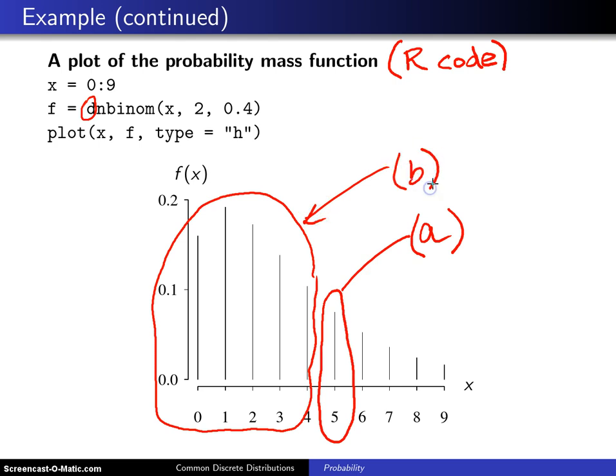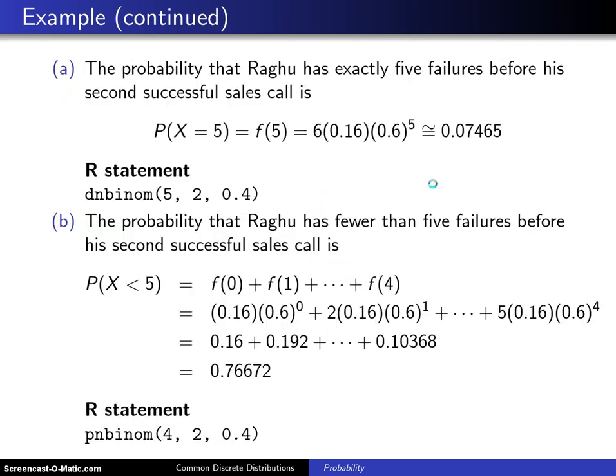Now I could do those by simply plugging into the probability mass function and summing, but instead I'm going to show you both how to do it in that fashion and also how to calculate these in R.